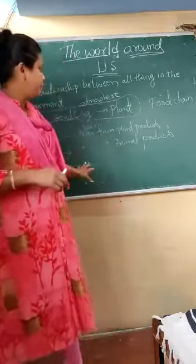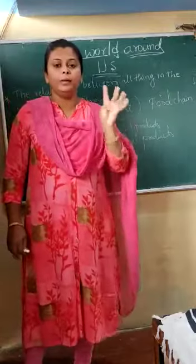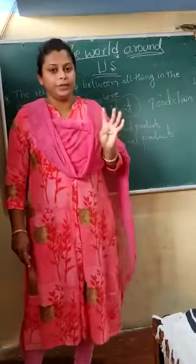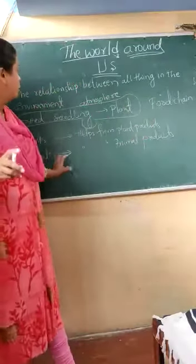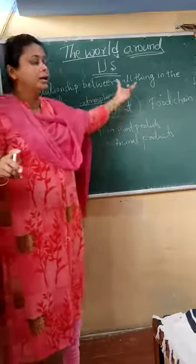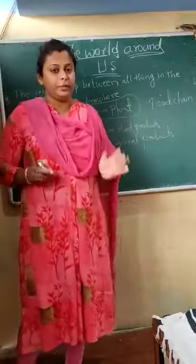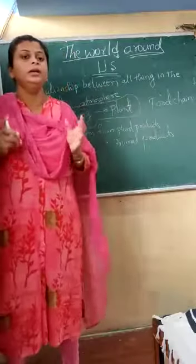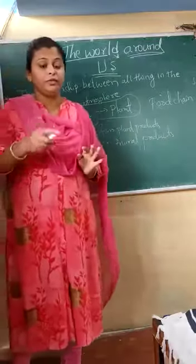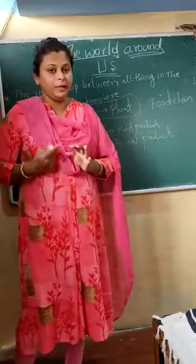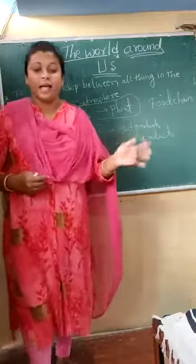I hope you all have understood what we discussed. I have tried to give you some ideas about how the relationship between all things in nature exists, and how we get help from plants, plant products, animals, and animal products. I will give you two homework questions: write down the help from plants in nature, and write down the relationship between animals and other things — how animals help us in different ways. See this video repeatedly if needed. Let us meet in the next video with a new topic. Till then, take care. Bye-bye.